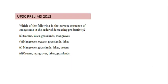Now let's solve a question asked in UPSC Prelim 2013. The question asks for the correct sequence of ecosystems in order of decreasing productivity. Productivity refers to the stored organic matter in plants. Out of the options given — ocean, lake, grassland, mangrove — we can determine that oceans and lakes will have minimum primary productivity because they have relatively fewer plants. So they should be placed last, and the only option with ocean and lake at the last is the correct one.